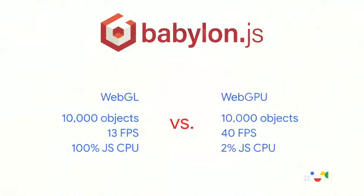For this specific early demo, WebGPU is able to submit three times more drawing commands than WebGL while leaving room for your application's logic. A major new version, BabylonJS 4.0, was released just last week, and the BabylonJS developers are so excited about WebGPU that they are going to implement full support for WebGPU in the next version, BabylonJS 4.1.